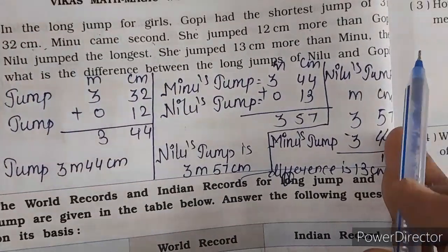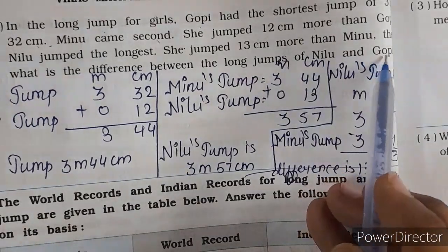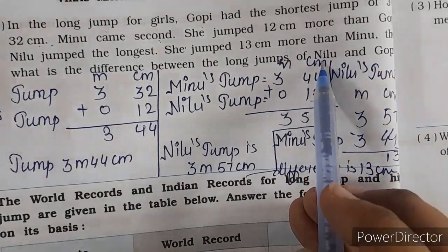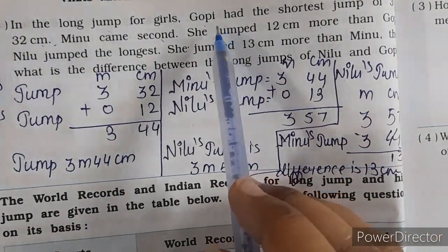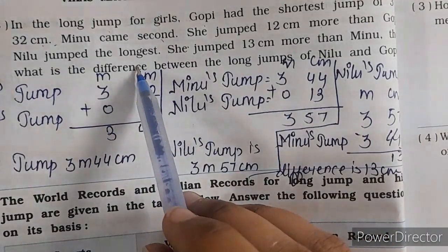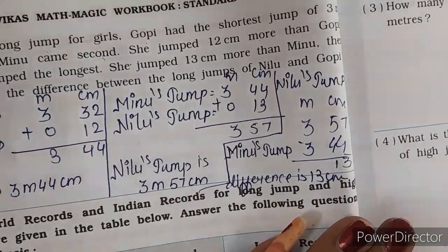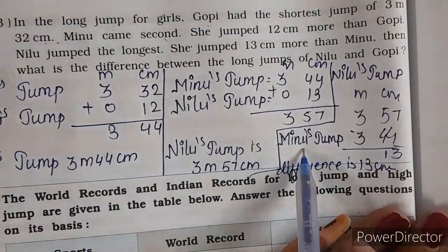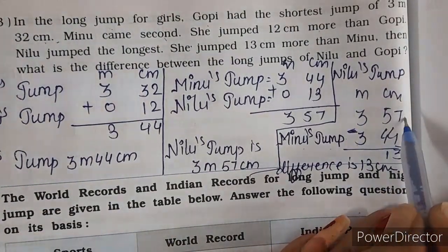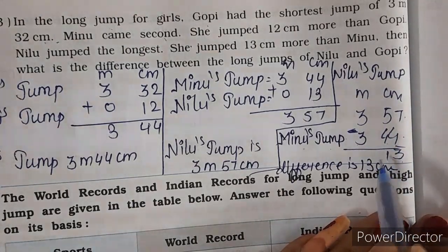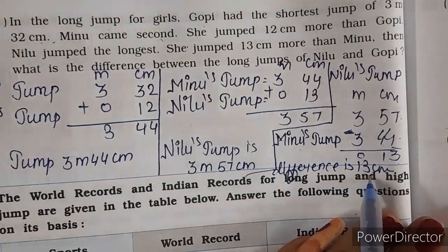Now next question — what is the difference between the long jump of Nilu and Gopi? Yani ki jo first number aaya Nilu, uski jump se Gopi kitni peechhe hai. Ham minus karenge. Nilu ki jump kitni hai — 3 meter 57 centimeter. Gopi ki jump — 3 meter 32 centimeter? Wait — transcript says Minu ki 3 meter 44 centimeter at seg 611-612. Actually solving: 57 minus 44 at seg 614-624 gives 13 centimeter. So difference kitna hua — 13 centimeter.